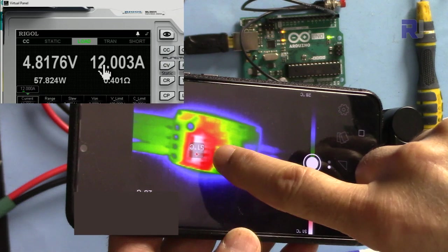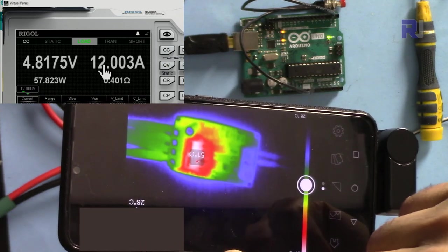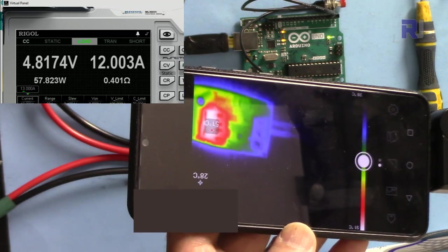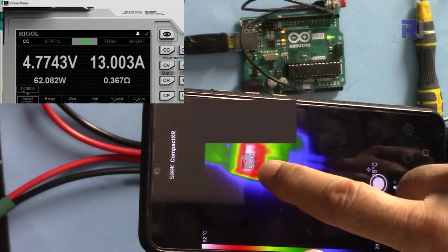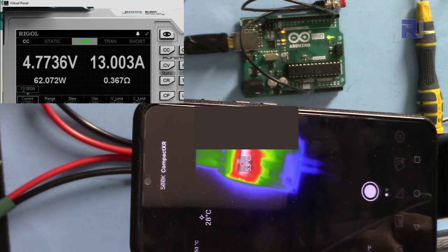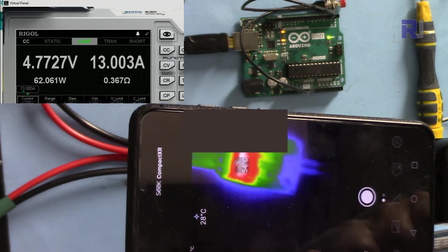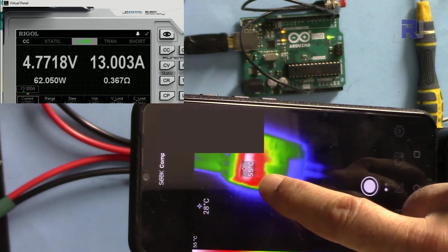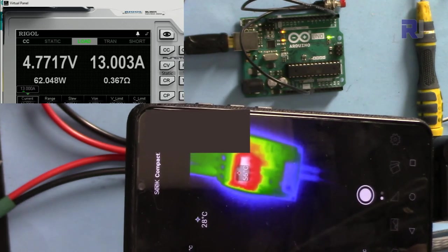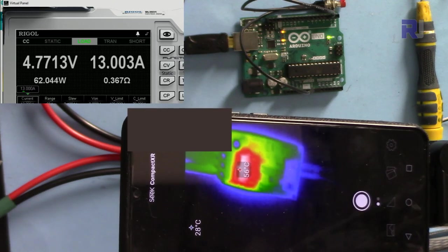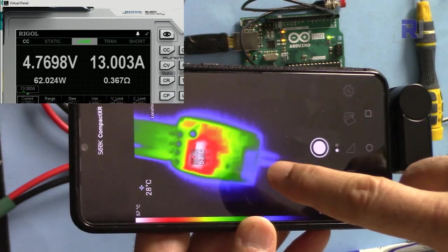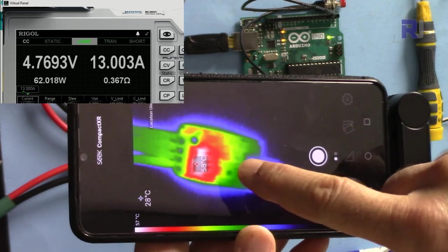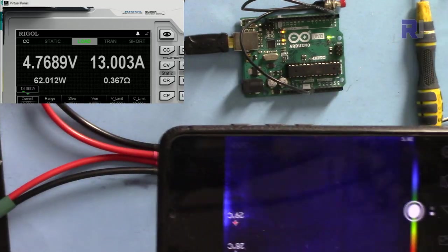51 degrees, still very cool. Comparing it with 12 ampere, let's go 13. 53 degrees, 50 Celsius here. 54, that's the hottest spot on the screen. 55, the temperature is slowly increasing.